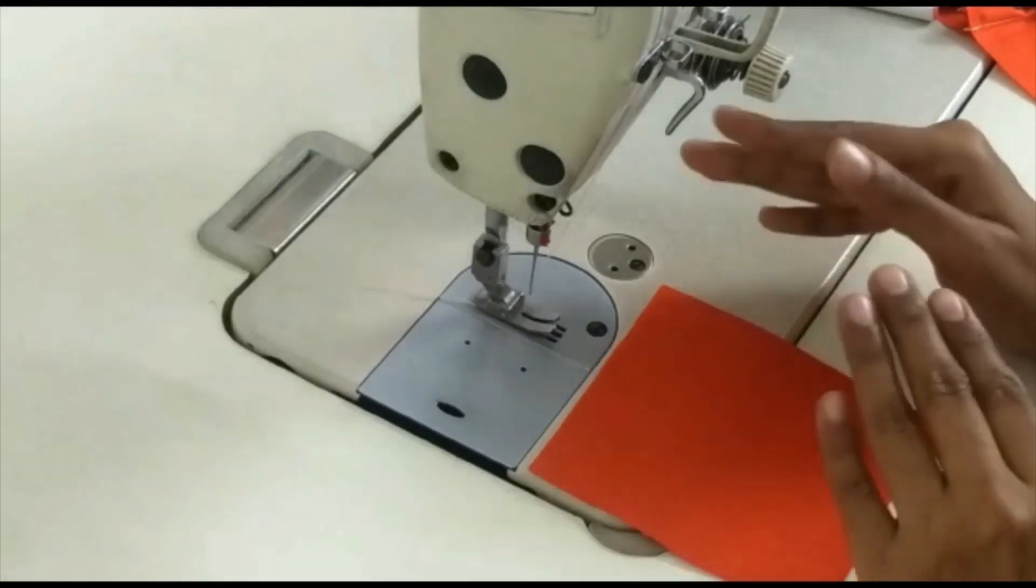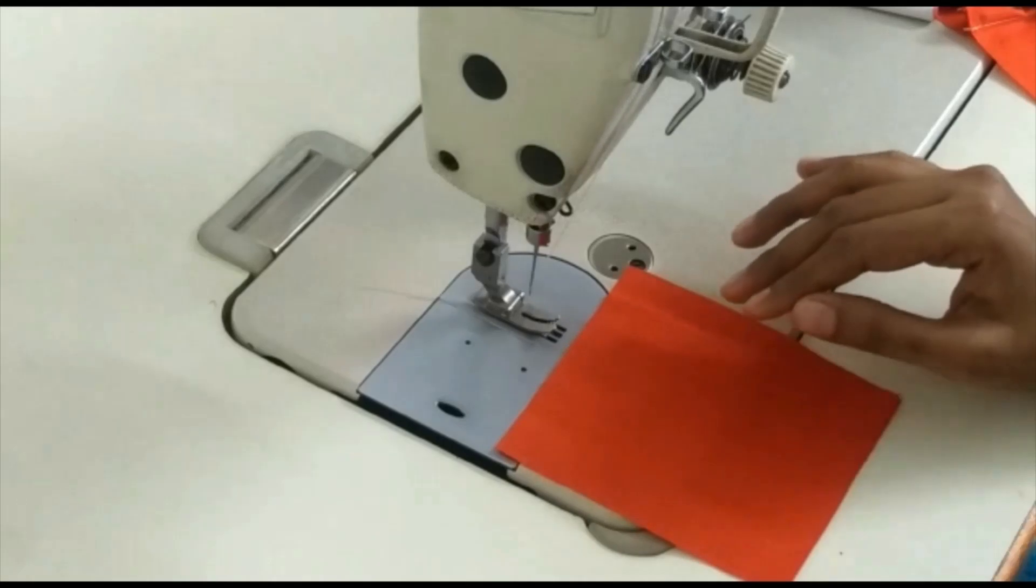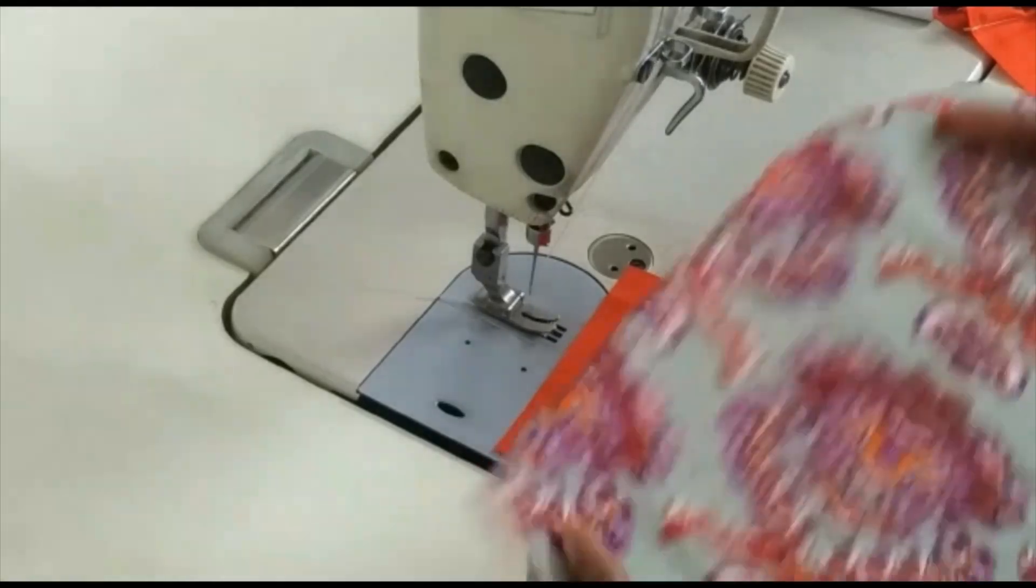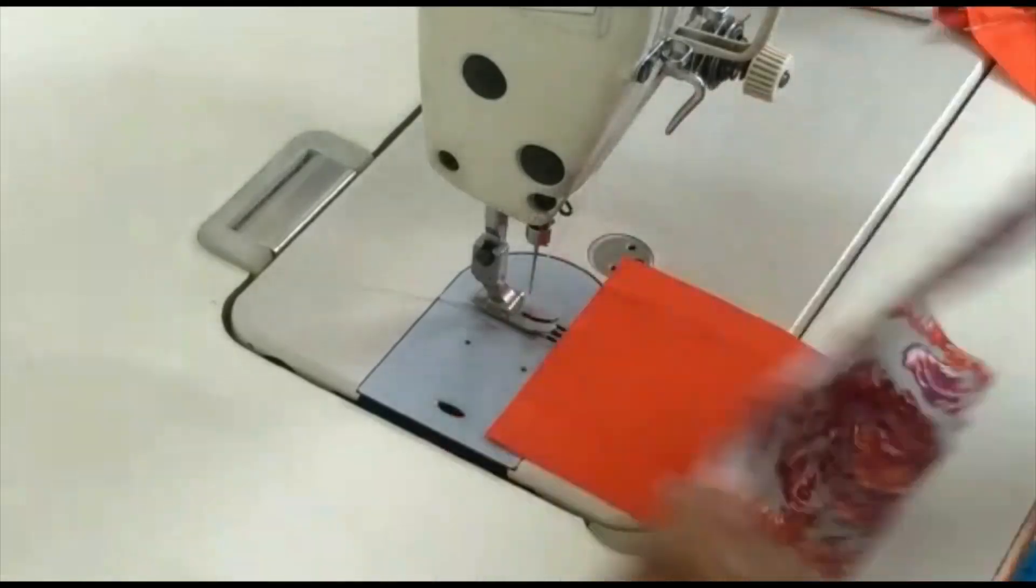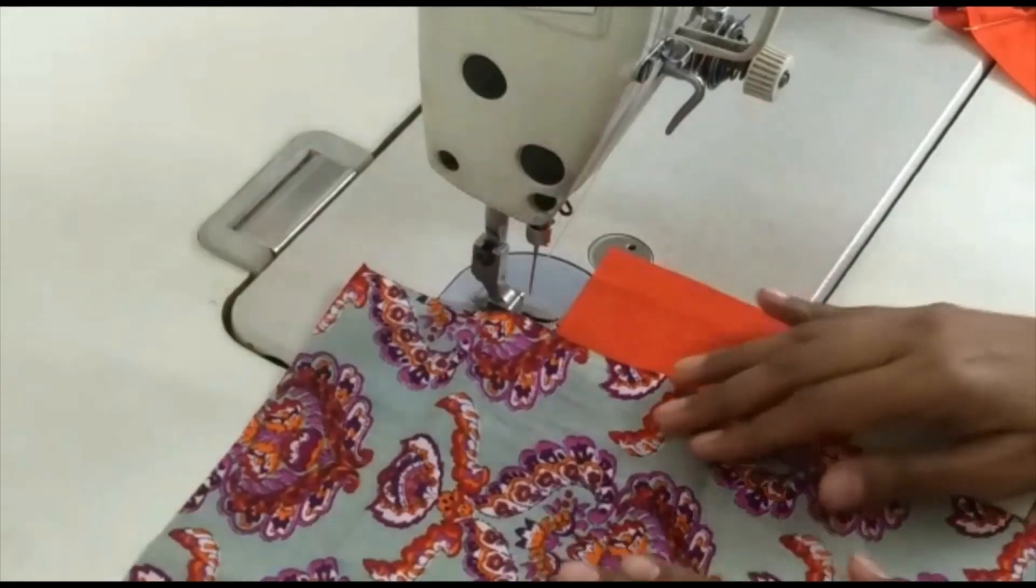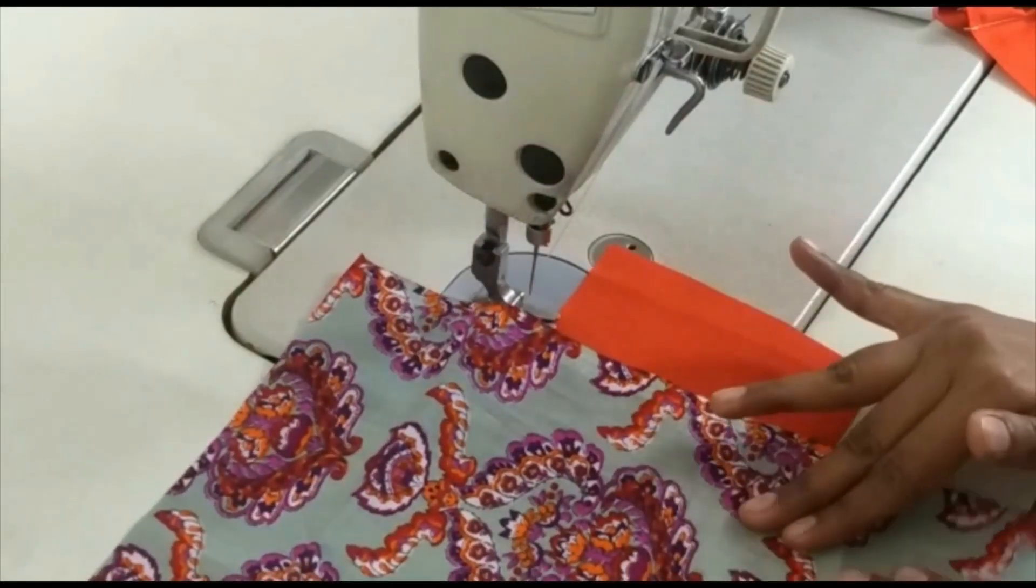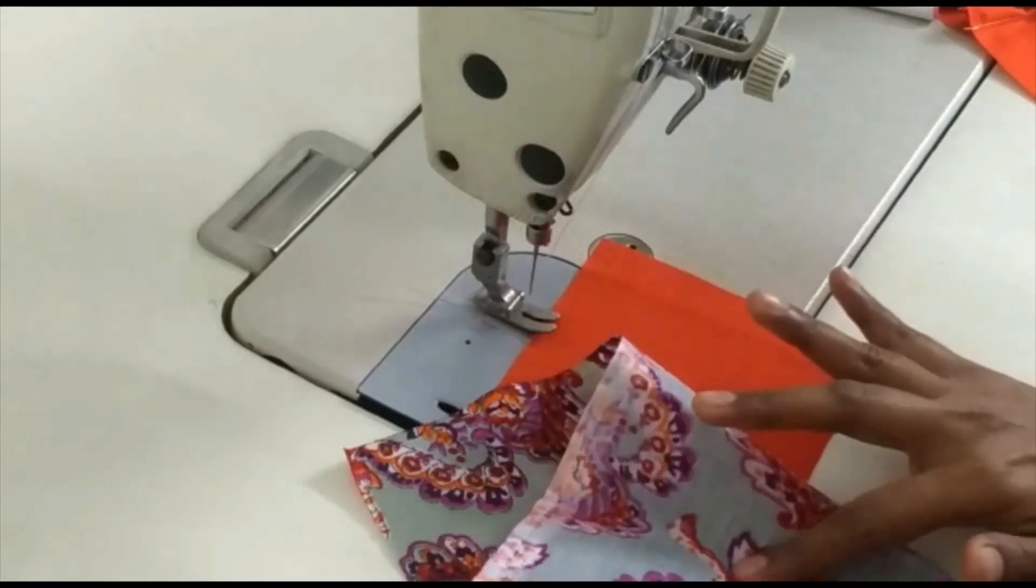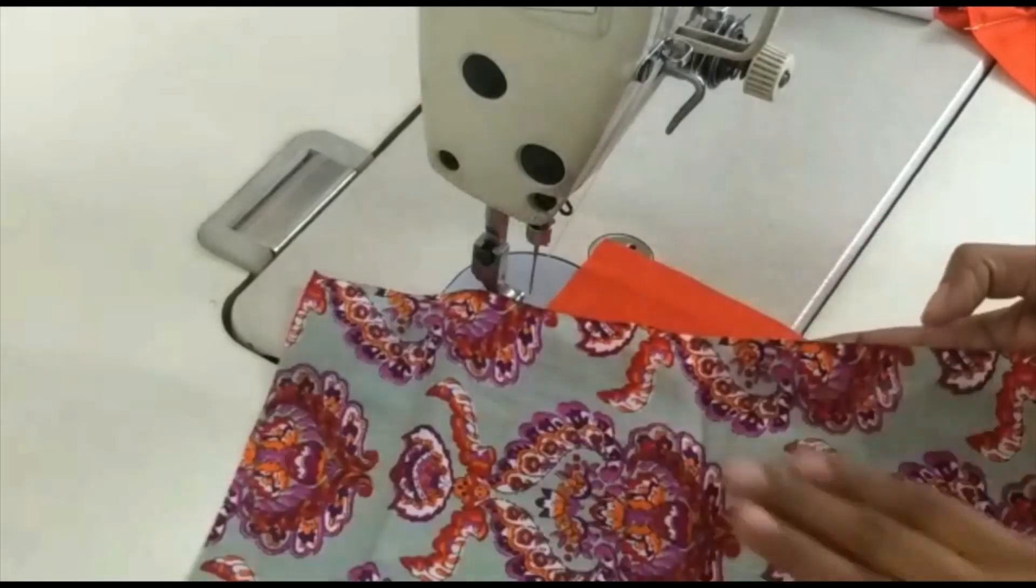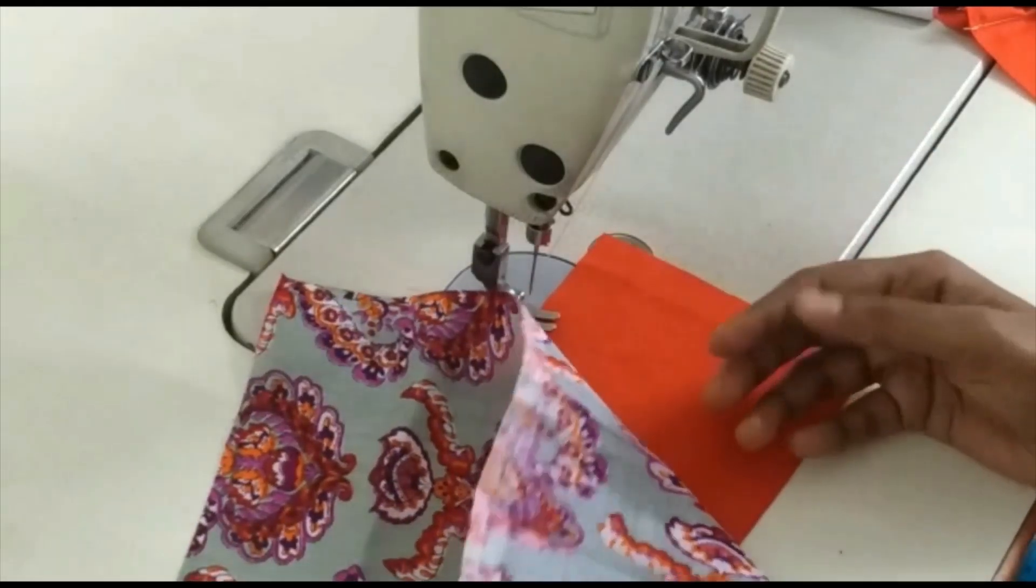Before start sewing, let me explain what is right side and wrong side in a garment. I am taking printed fabric so that it will be easy to understand. In a fabric, outside part is the right side and the inner part is the wrong side. So this is right side and this is wrong side. Let's start.